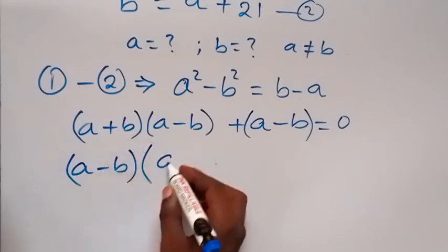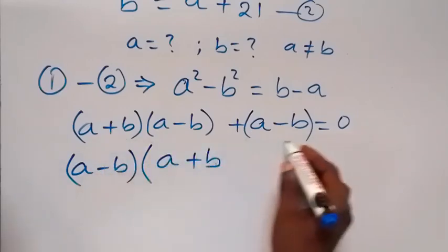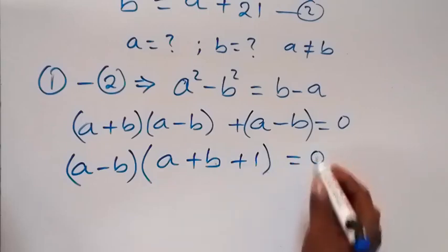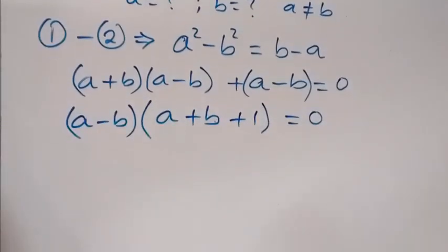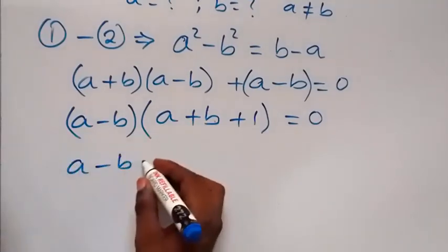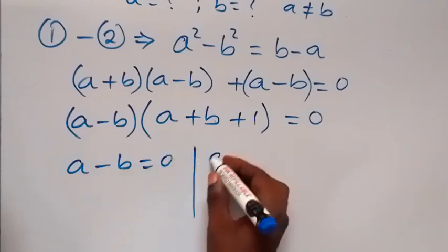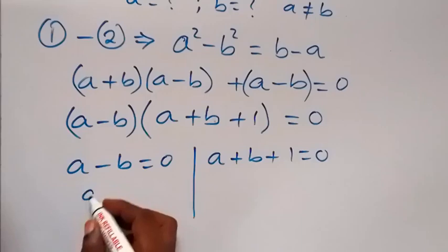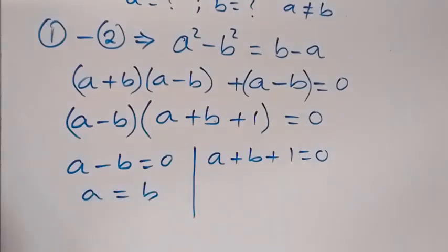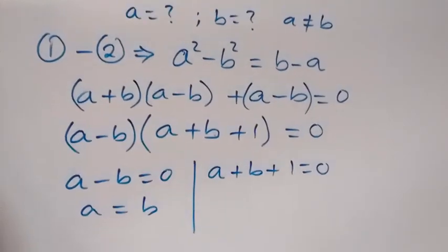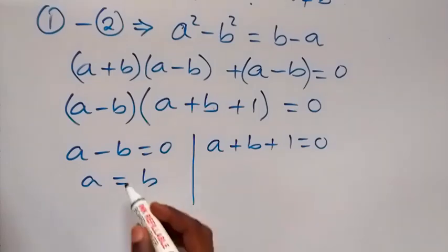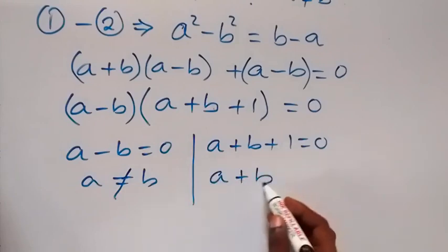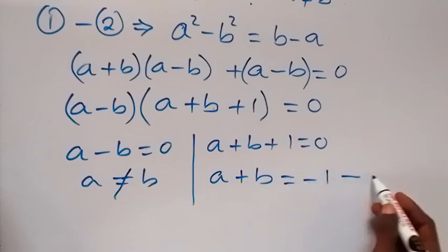...multiplied by (a plus b plus 1) equals zero. We have two cases: a minus b equals zero, or a plus b plus 1 equals zero. Since we established that a should not equal b, the first case is excluded. From the second case, a plus b equals minus 1 — let this be equation 3.